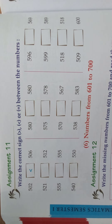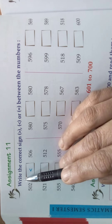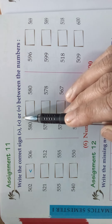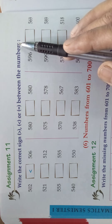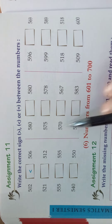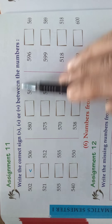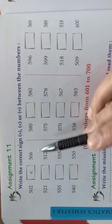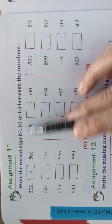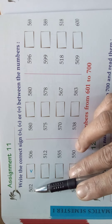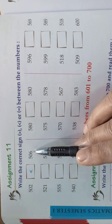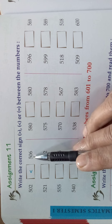Come, children, we will do assignment 11. Read the question: write the correct sign — greater than, smaller than, or equal — between the numbers. The numbers are given on this side and that side. We should compare the numbers and write whether it is equal, greater than, or smaller than. One is done for you. First we read the numbers: 502 and 506. Which is greater? 506. So the crocodile mouth will eat the big number.